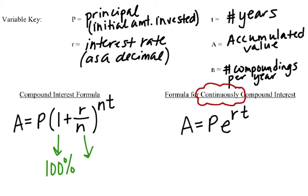But the variables in this equation are the same as the variables in our compound interest formula. So P is still principal, R is still our interest rate, A is still the after amount, or the accumulated value, the amount that the investment has grown to.